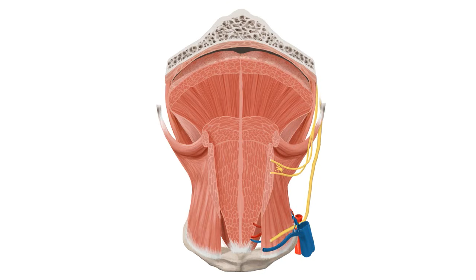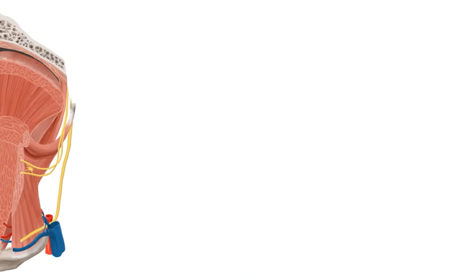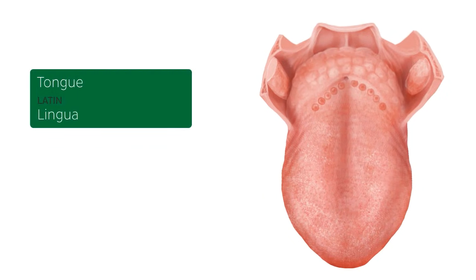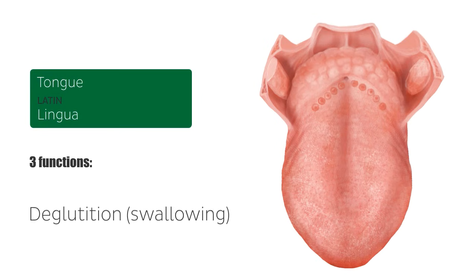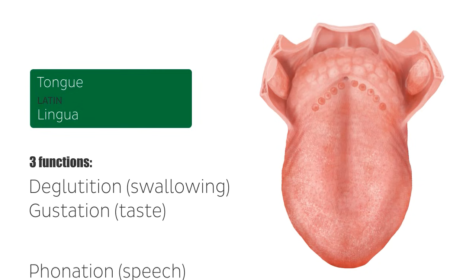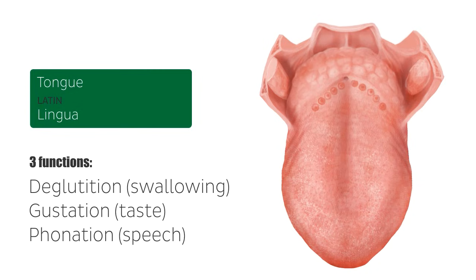After we've discussed these muscles we will be looking into some clinical notes relating to them. But before we do that, let me give you a brief introduction to the tongue. The tongue is a muscular organ that helps form the floor of the oral cavity. It has three main functions: deglutition or swallowing, gustation or taste, and phonation or speech.